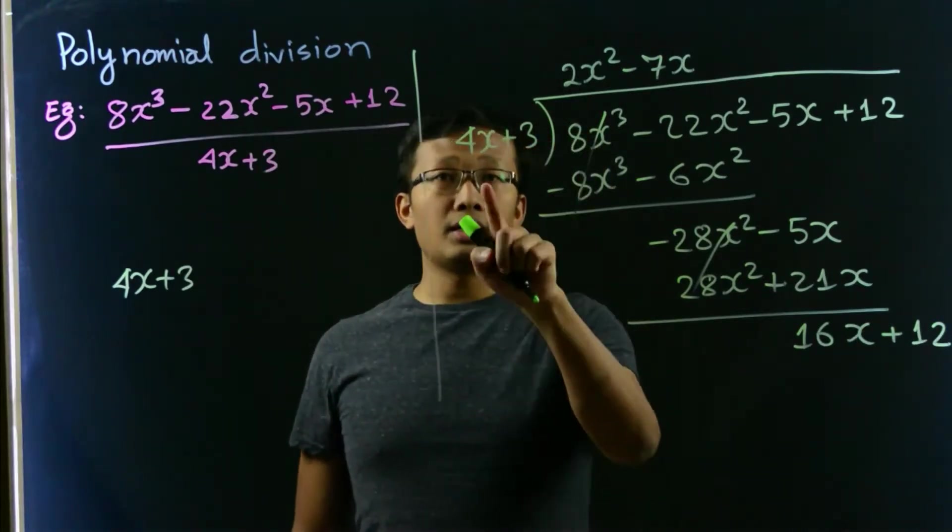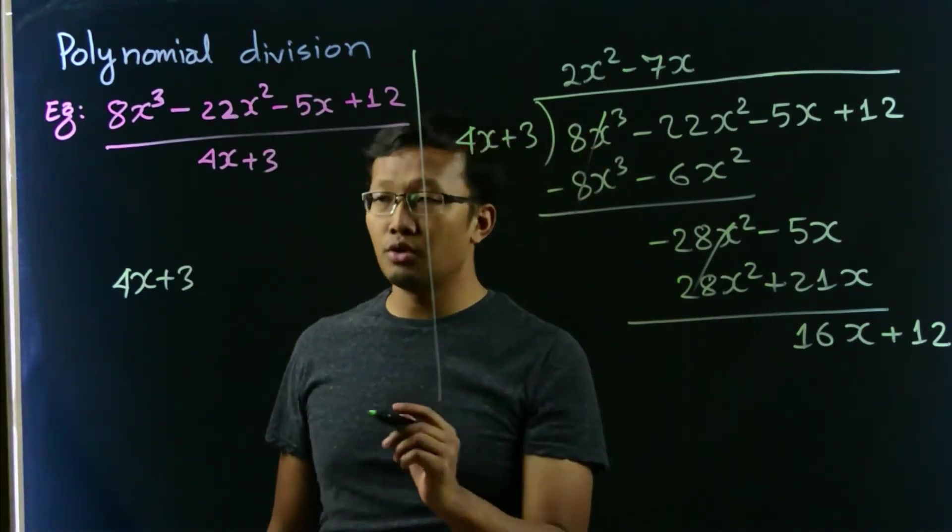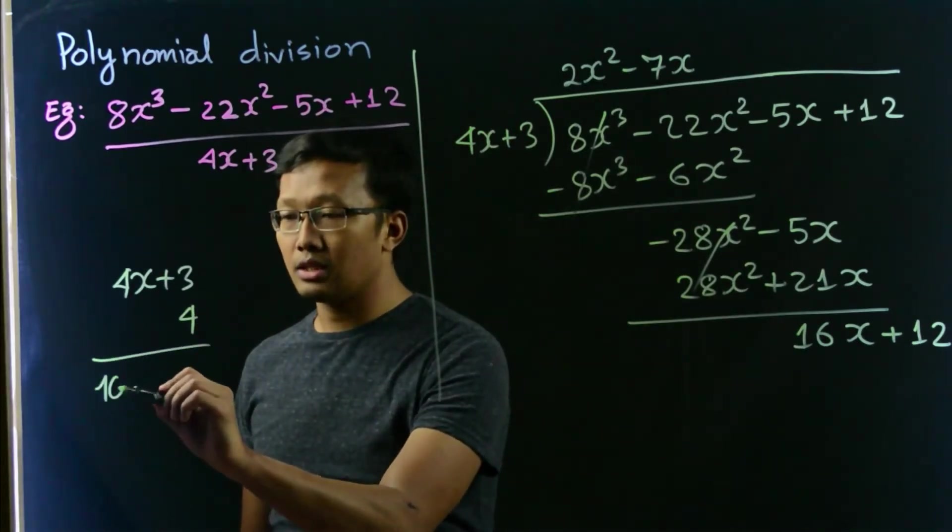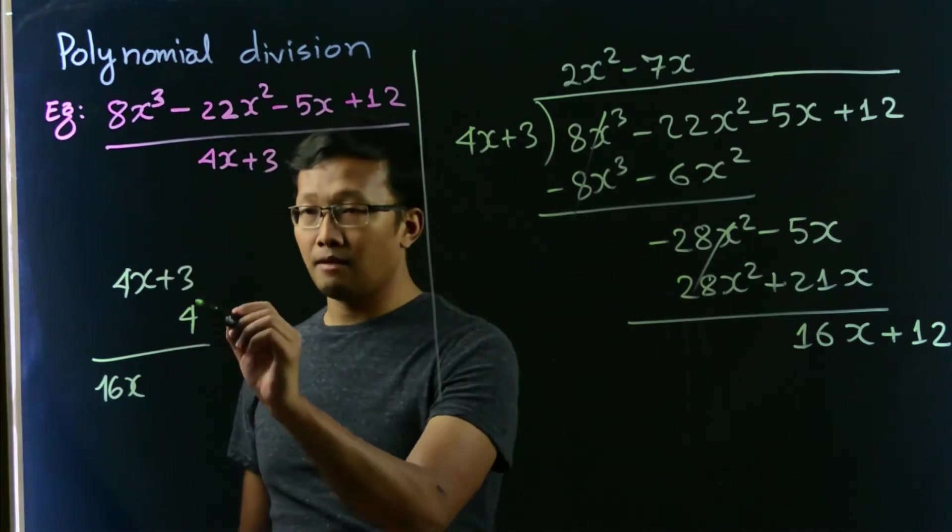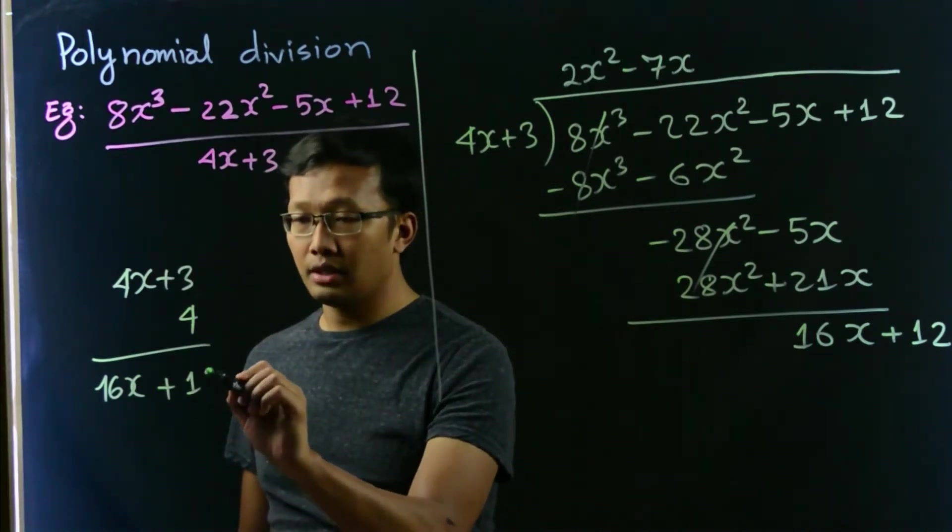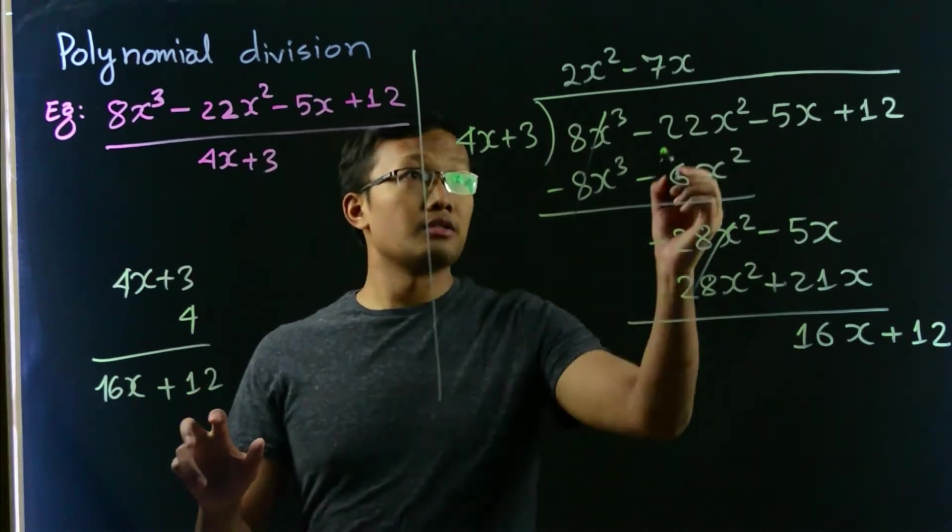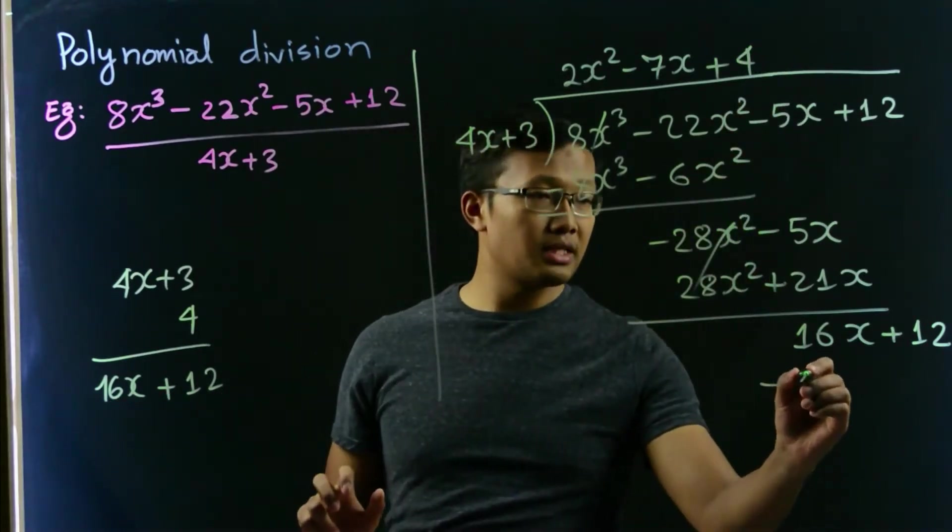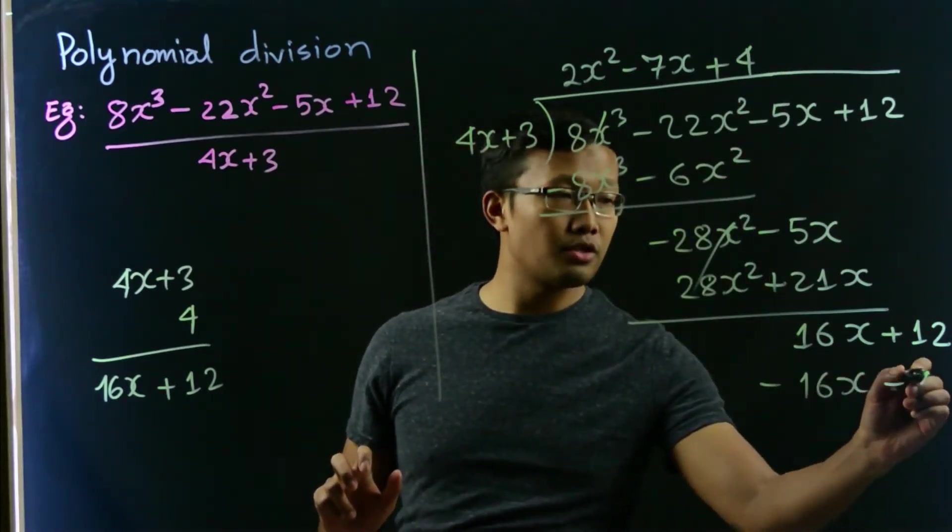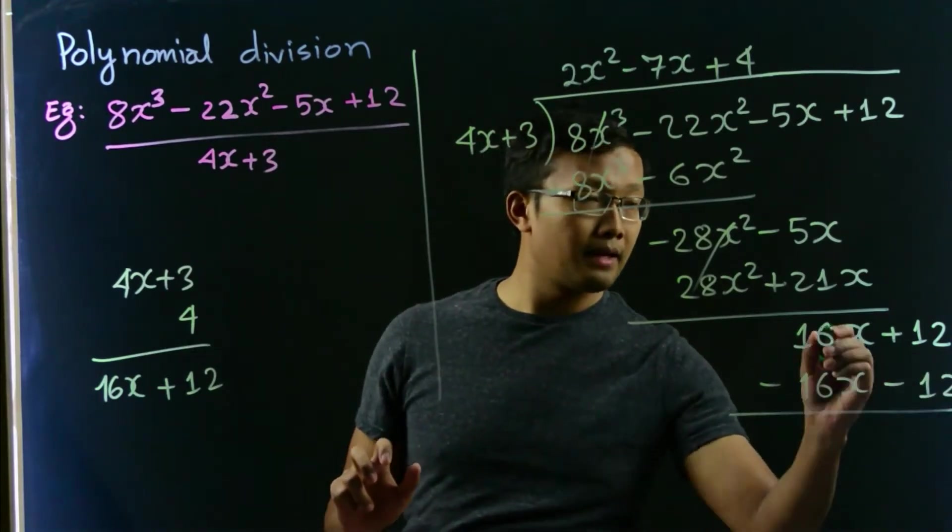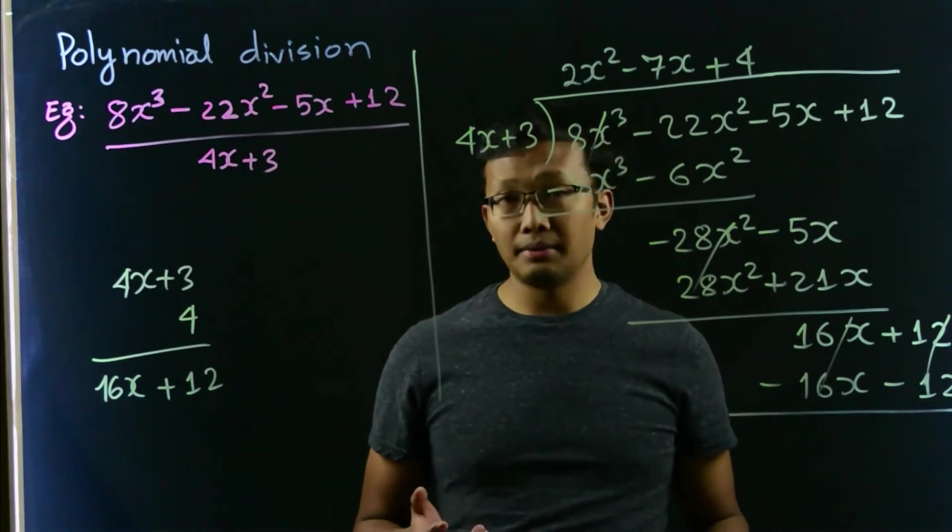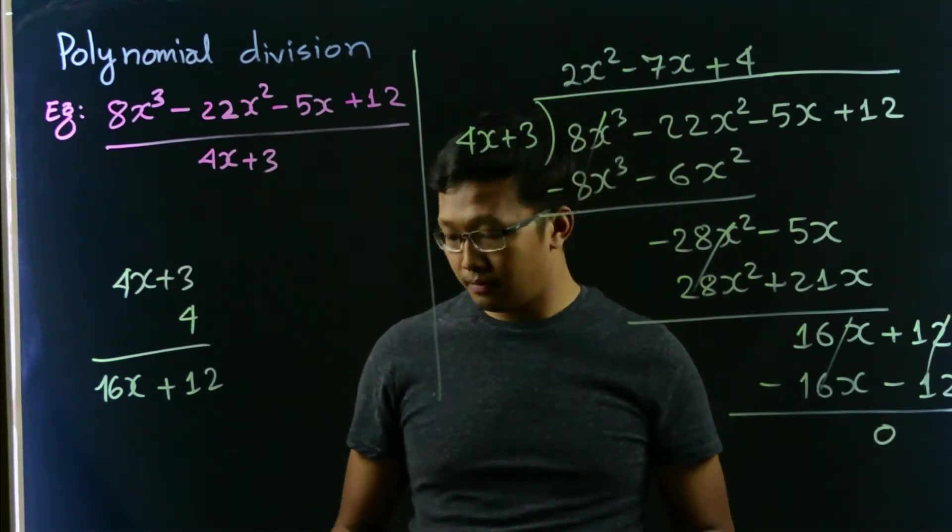We can see that 4x plus 3 should be multiplied by 4, such that it will give us 16x, and 4 times 3 is 12. And so that would be 4. Let us change the sign. Negative 16x minus 12. 16x, negative 16x cancel out. 12 and negative 12 also cancel out, so this is 0.